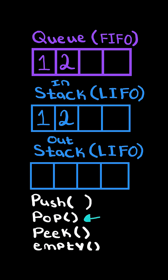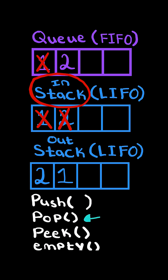Now let's apply a pop operation. In a queue it's first-in, first-out, so we pop one. To achieve a similar result, we pop all elements from the in-stack and append them to the out-stack. Then we do a final pop to remove the last element in the out-stack, achieving the same result as the queue.